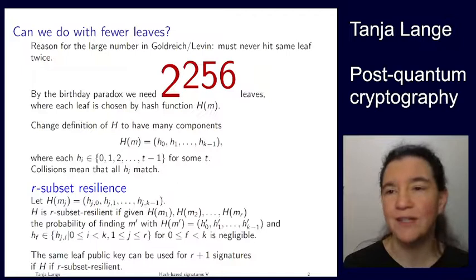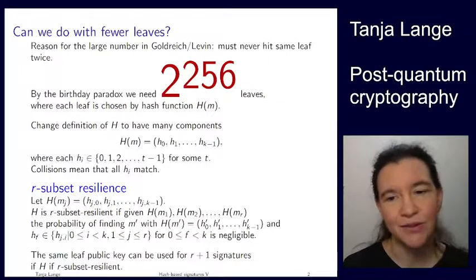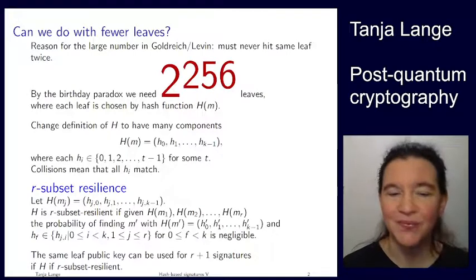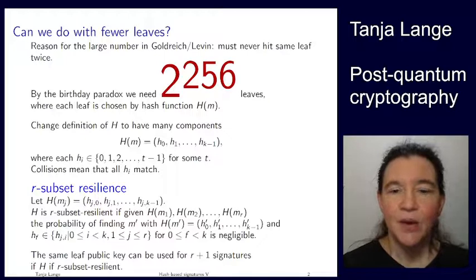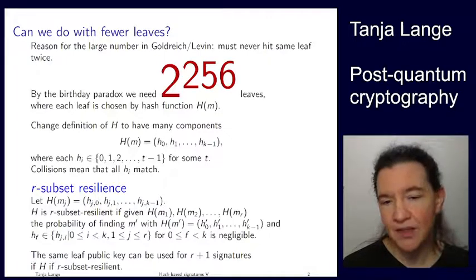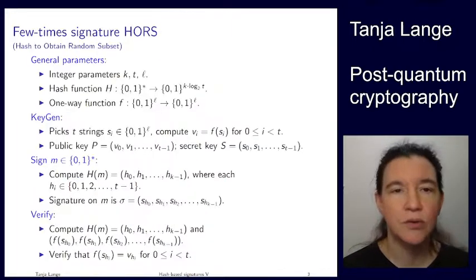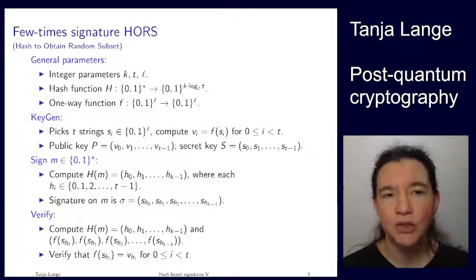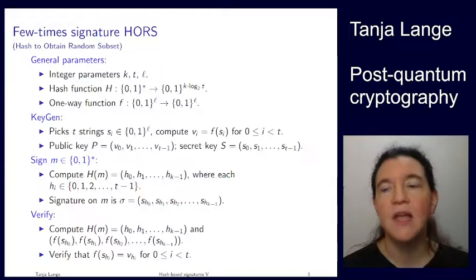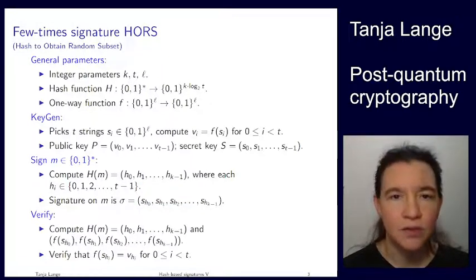If this isn't fully clear, that's fine because there's an exercise on the exercise sheet. So let's look at how such a few-time signature, in this case an r plus one-time signature scheme, is defined. So we're looking at HORS, which is the hash to obtain random subsets, which is the basis of HORS used in SPHINCS.